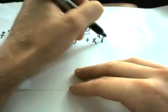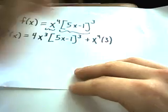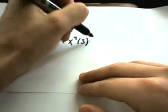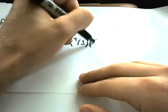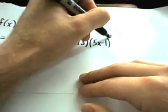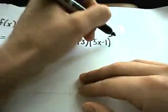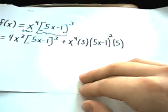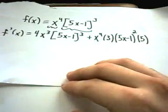So the 3 will come out front. I'll leave the inside part alone — so 5x minus 1 — I'll take 1 away and get to the second power, and then multiply that by 5.